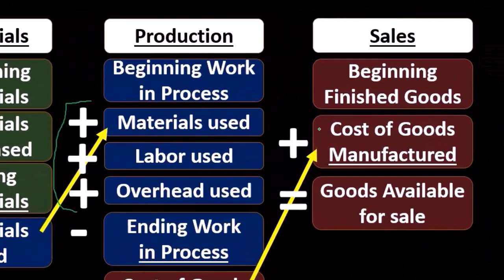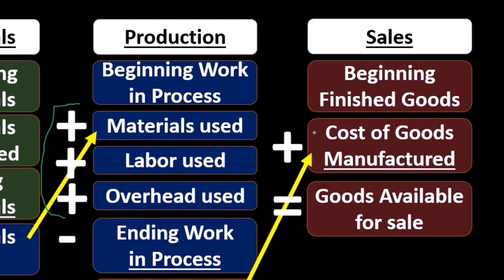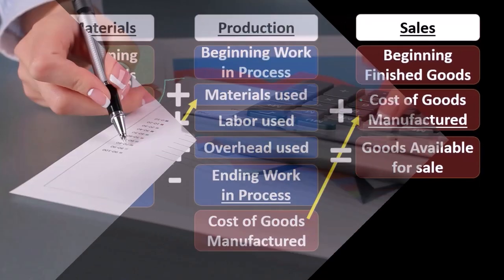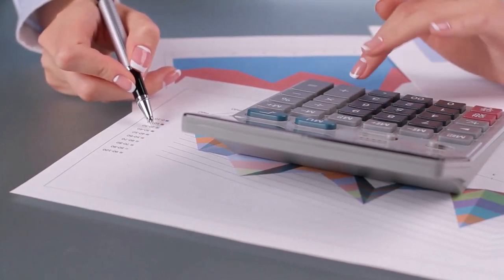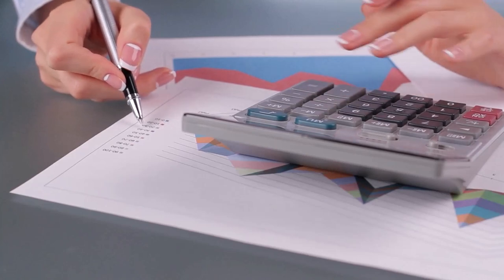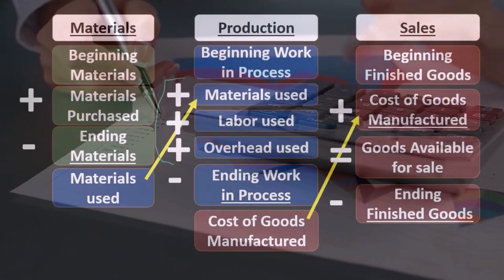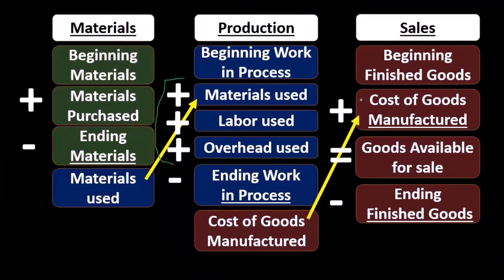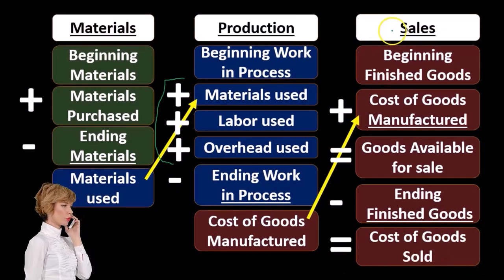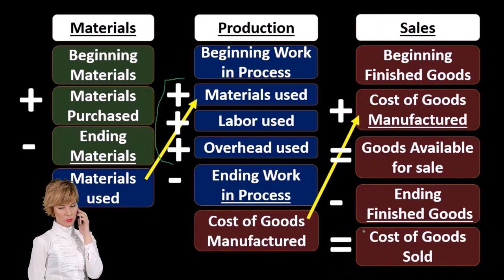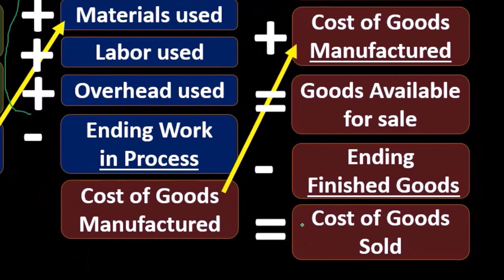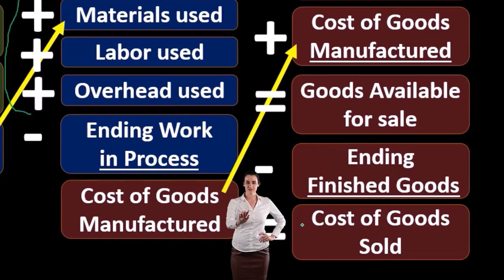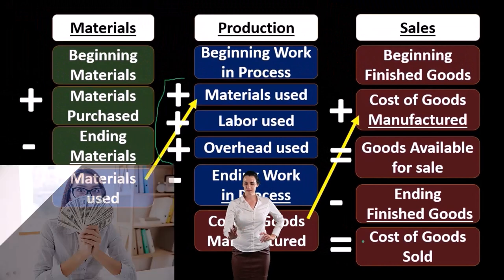That gives us goods available for sale — a subcategory representing what we could have sold during the time period. This is our calculation of cost of goods sold. We then subtract ending finished goods inventory, which we can get from a physical count, to finally get cost of goods sold. Notice that the only item going on the income statement is cost of goods sold — not the sales item. This flow doesn't track the sales price; the sales price has nothing to do directly with the cost of goods sold.